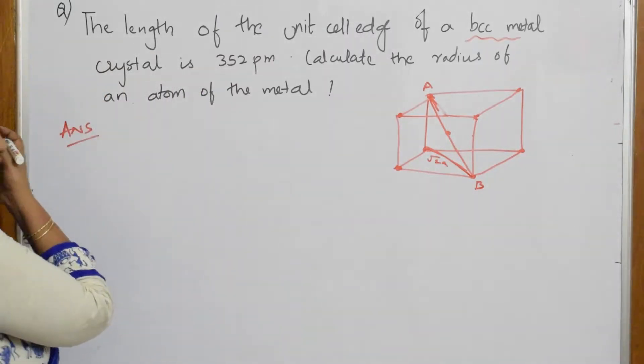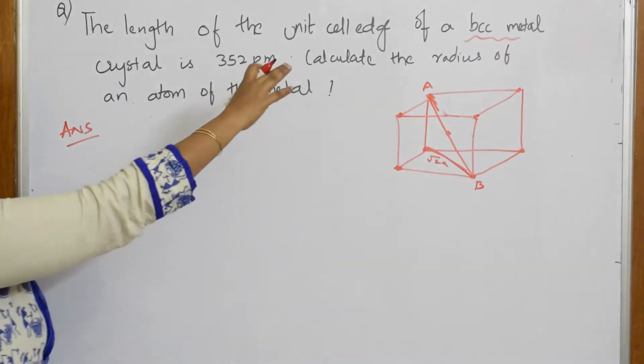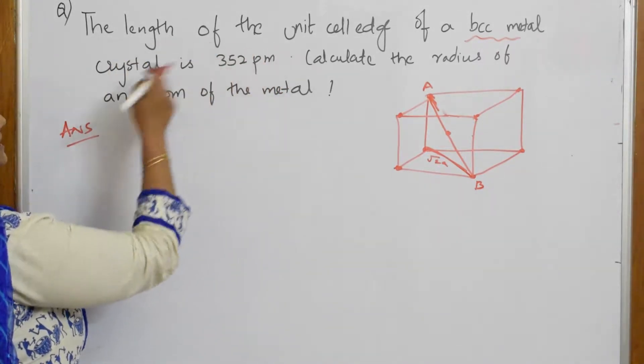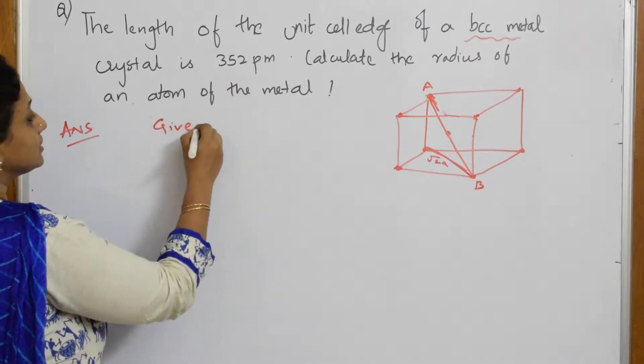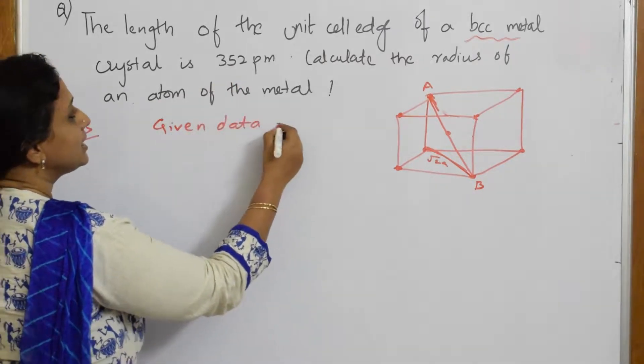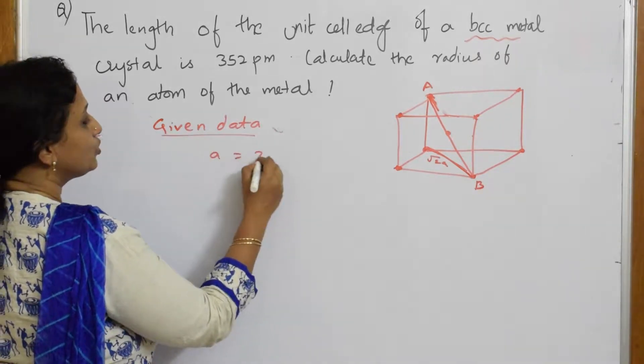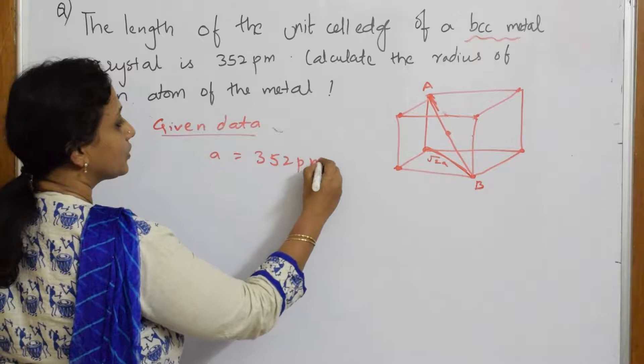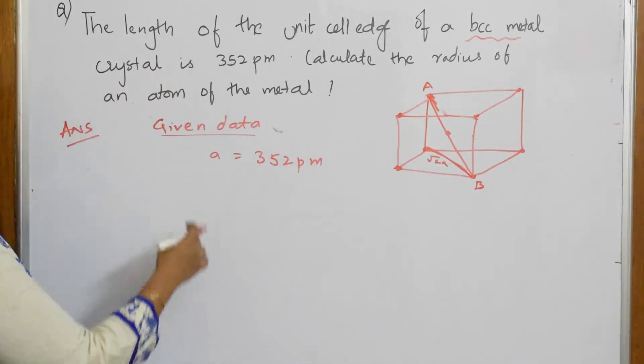What did they give me? BCC metal with edge length. The given data is: a = 352 picometer. They've given this edge length data - 352 picometer. They're asking me to find out radius.